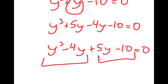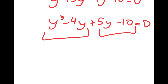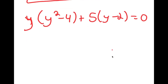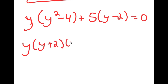So now if I factor by grouping, I start with y cubed minus 4y and factor out y, so I get y times y squared minus 4. Then from 5y minus 10, I have 5 times y minus 2 is equal to 0. Now y squared minus 4 I can rewrite as y plus 2 times y minus 2.